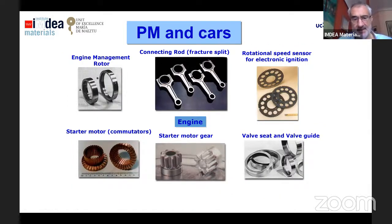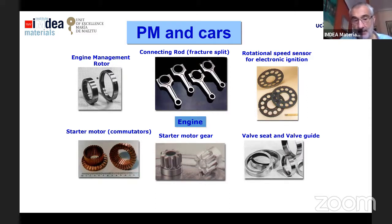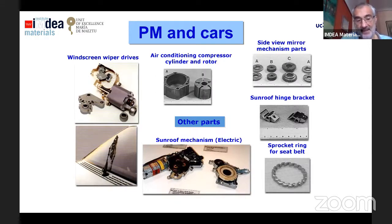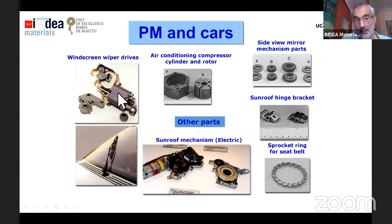The connecting rod is quite interesting — it can be manufactured by casting, by sinter forging, by forging, but also by PM, usually by a double press and sinter method: press, sinter, then press again and sinter again. For small electrical engines inside the car that move different systems like the windscreen wiper drivers or the sunroof mechanics, PM parts are also widely used.